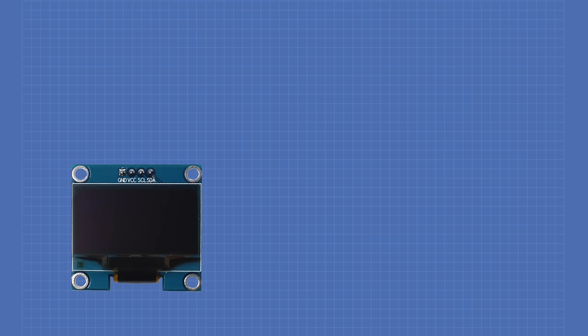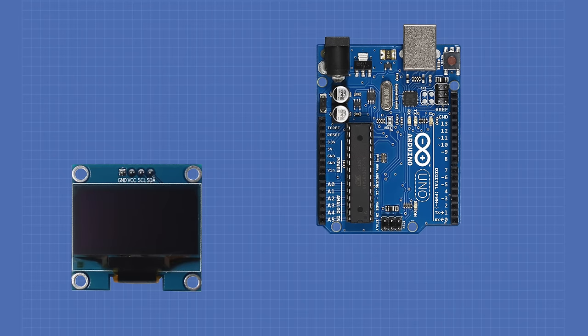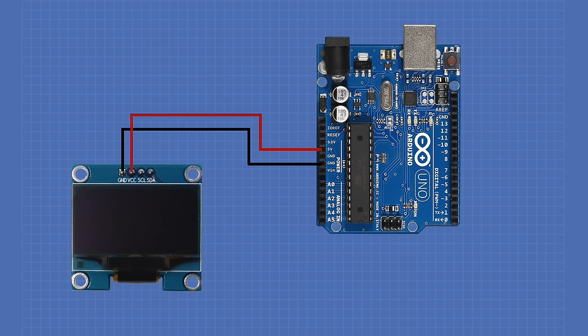I'm going to illustrate the large display in my connection diagram, but keep in mind connecting the smaller display is identical. Your Arduino may have separate connections for SCL and SDA — if so, feel free to use those instead of the analog connections; they're actually internally the same connection. Now that we have it wired up, let's take a look at some code to put something onto our OLED displays.